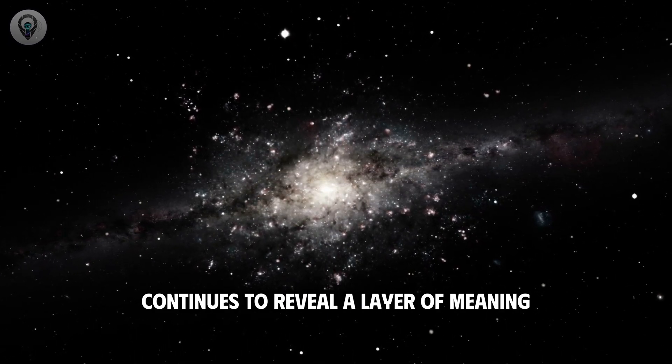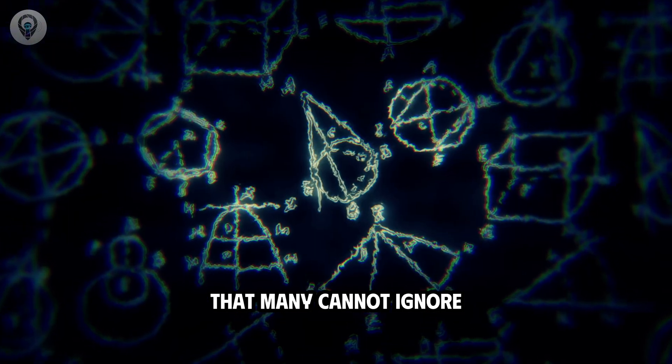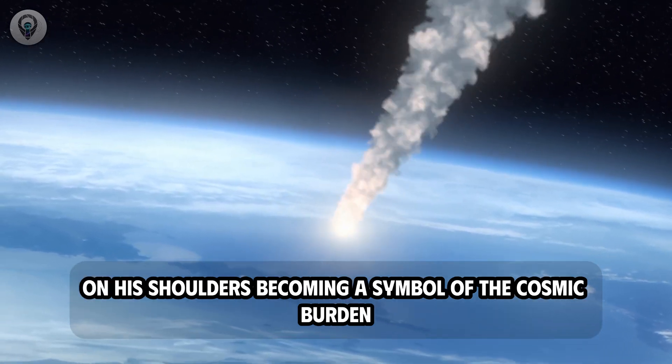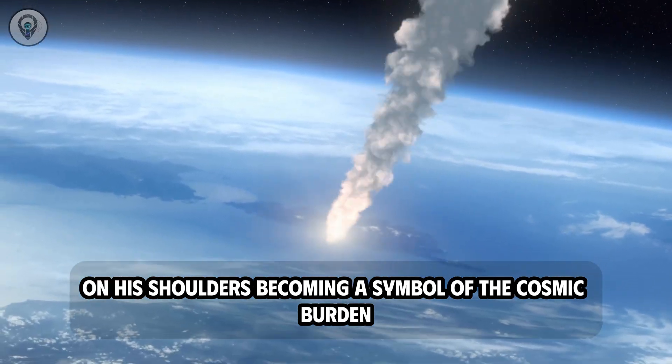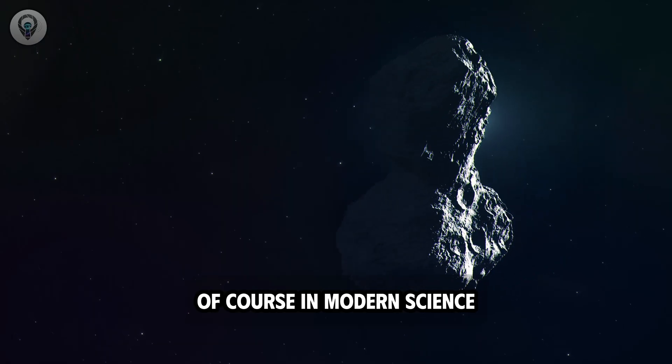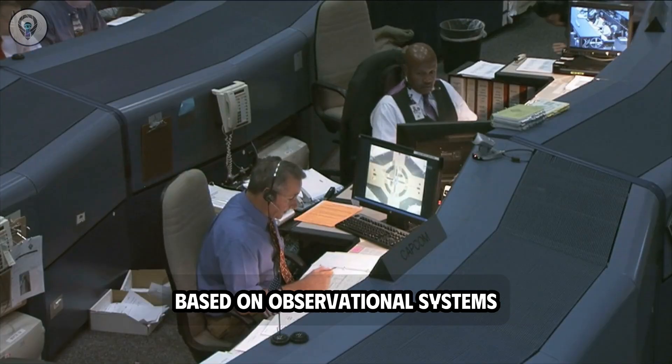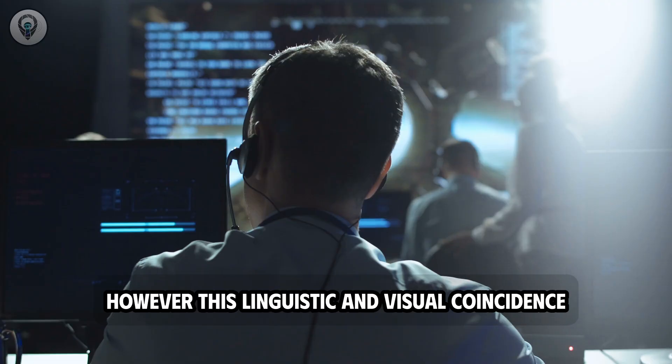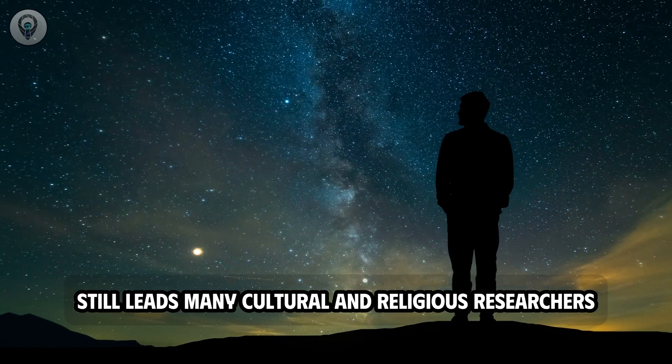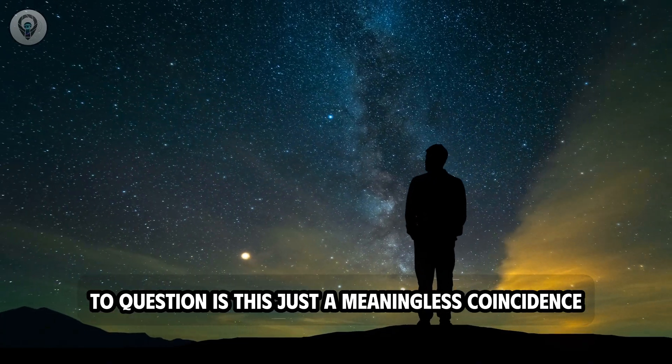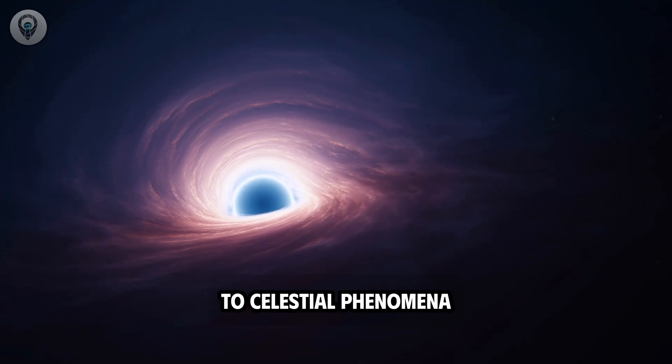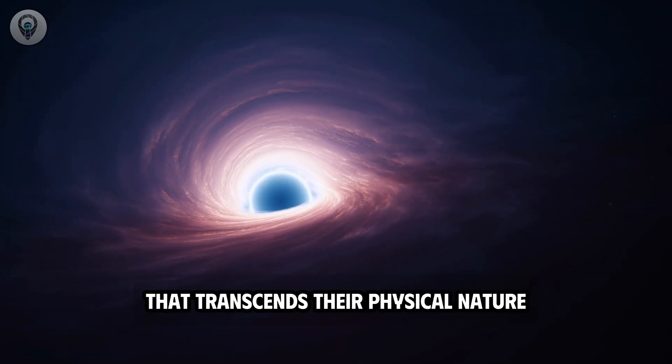At a deeper level of symbolism, the name Atlas continues to reveal a layer of meaning that many cannot ignore. In ancient mythology, Atlas was a figure destined to bear the weight of the sky on his shoulders, becoming a symbol of the cosmic burden and the order of the world. Of course, in modern science, Atlas is merely a technical designation based on observational systems. However, this linguistic and visual coincidence still leads many cultural and religious researchers to question: is this just a meaningless coincidence or does it reflect a long-standing human tendency to attribute a mission to celestial phenomena that transcends their physical nature?